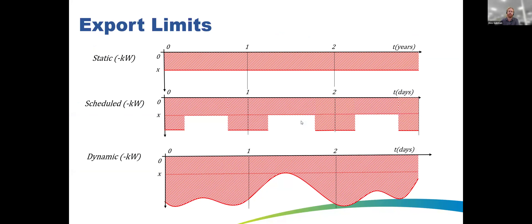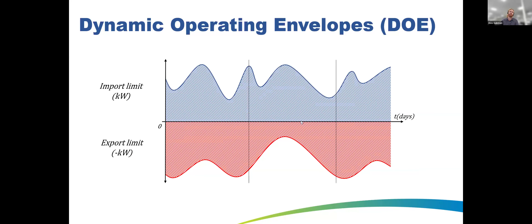Traditionally, export limits have been a static limit that didn't change over time. We're moving towards dynamic, which is updated in real time based on the current network constraint — generally meaning customers can export more than they would under a static limit. We also use the term 'scheduled' for something halfway between the two, like a time-of-day schedule but not exactly real time. It's called a dynamic operating envelope because an envelope has two ends — in addition to an export limit, you can equally have an import limit on the other side, applying to controllable loads.